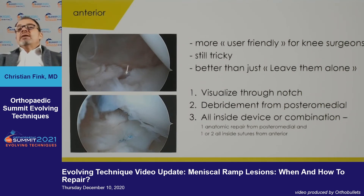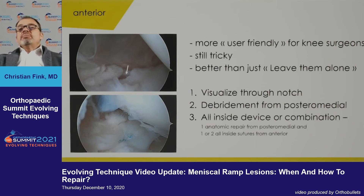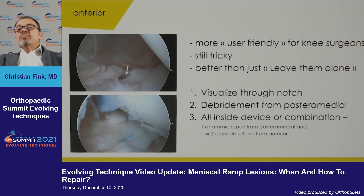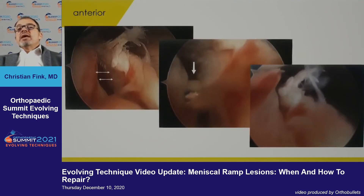Alternatively, and this is more user-friendly for the knee surgeon, you can repair it from anterior, especially in the acute lesion. It's still tricky, but it's better than leaving these lesions alone. You have to visualize through the notch, do the same debridement from posterior medially, then place your anchor. You can start by putting your scope from the front and then follow your anchor — a transcondylar approach. Sometimes I combine this: place one inside suture from posterior medially and then a second suture from the front. You can directly visualize how you get the anchor through the evolved tissue.